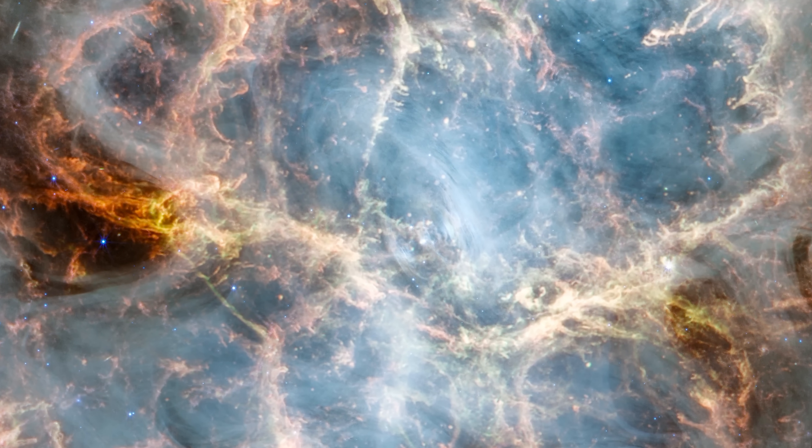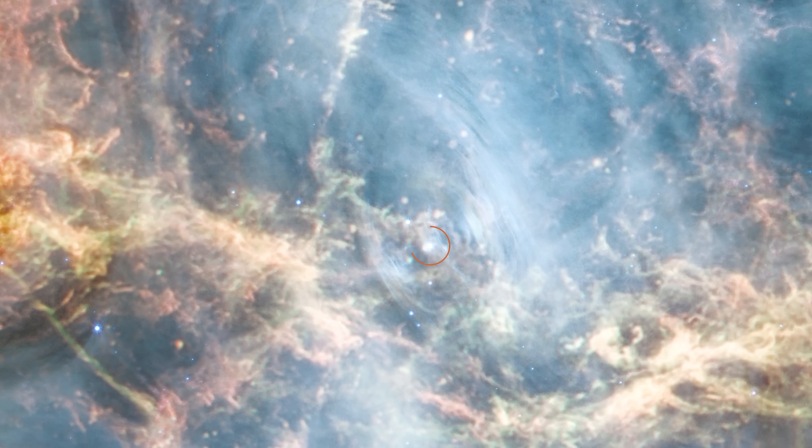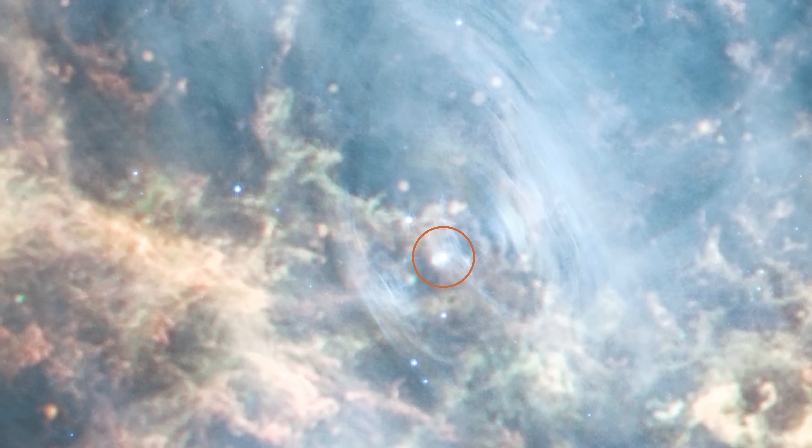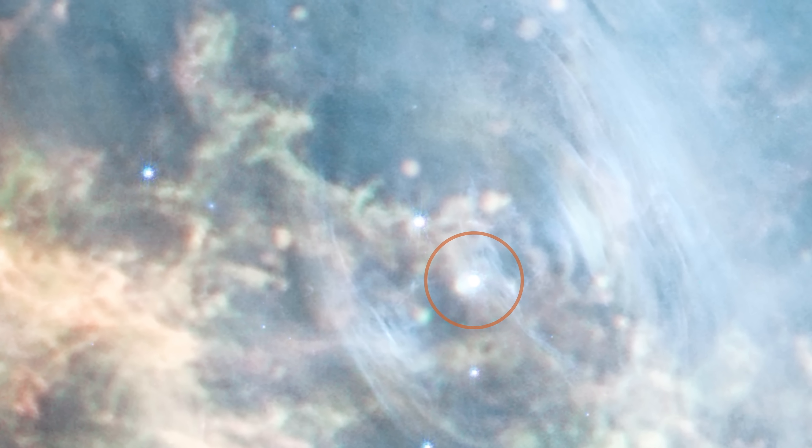In the center of it all is the Crab's pulsar, a rapidly rotating neutron star. The pulsar has an incredibly strong magnetic field and rotates very fast. It produces a wind of energetic particles that we call a pulsar wind nebula.